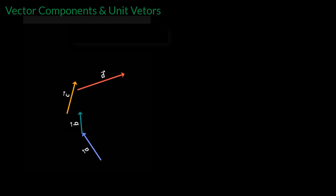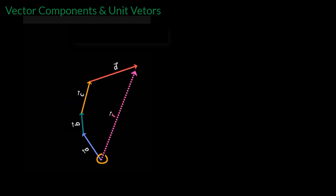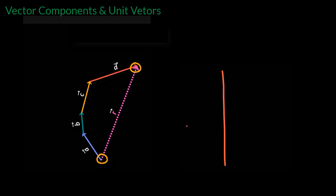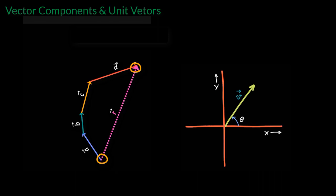By now, you know that adding vectors geometrically is not easy. The easier way is to put the vectors in a coordinate system first and then make use of simple algebra. And that is exactly what I will teach you in this lesson today.